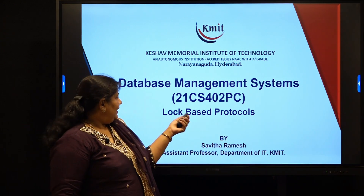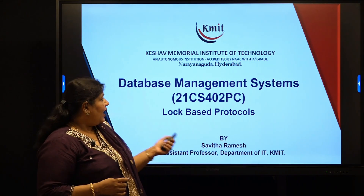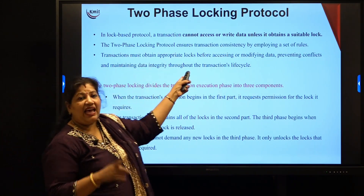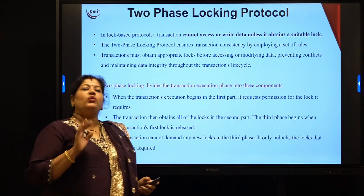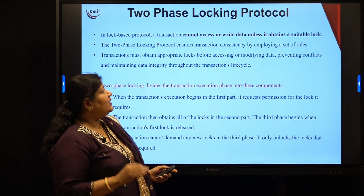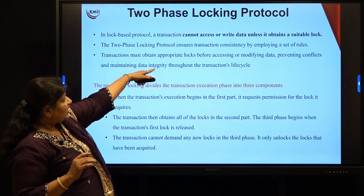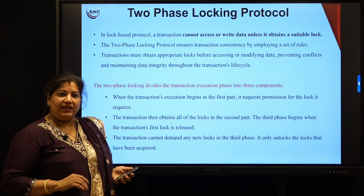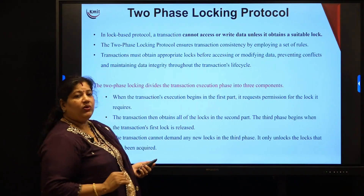Hello everyone. Let us try to see a two-phase lock protocol in order to implement isolation. When we talk about a lock-based protocol, a transaction cannot access, read or write the data unless it obtains a suitable lock. In a two-phase locking protocol, it ensures transaction consistency by employing a set of rules which says it has to obtain an appropriate lock before accessing or modifying the data, thus preventing any conflict and maintaining data integrity throughout the transaction's lifecycle.